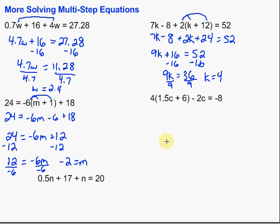Our next one also has parentheses, so to get rid of them we use our distributive property. We multiply that 4 by each thing inside the parentheses. 4 times 1.5c — let me correct that — gives us 6c, because 4 times 1.5 is 6.